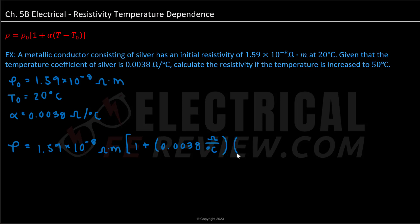And we have T minus T0. T is 50 degrees Celsius, so we have 50 degrees Celsius minus our initial 20 degrees Celsius.